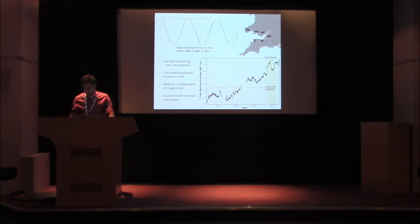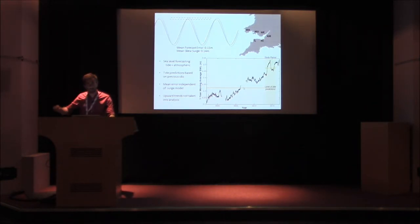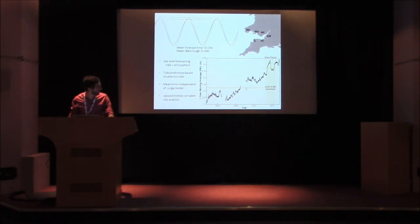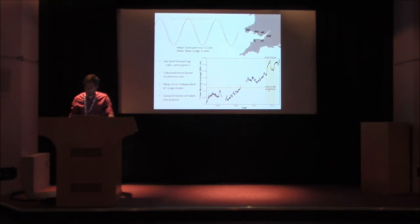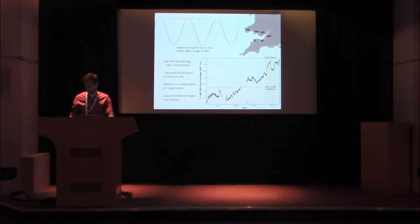This is a moving average, so I've filtered out a lot of the shorter period oscillations. You get this sort of mean sea level — the level of tide predictions would be here for the period you're looking at, when in actual fact the mean sea level is here. And this is because of this upward trend in the data.